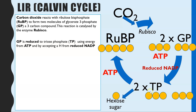This is the first stage where we see ATP being used, and it's also where reduced NADP is used. To convert GP into TP, energy is required, so one molecule of ATP is hydrolyzed and the energy released is used for that conversion. The reduced NADP donates its hydrogen to the GP molecule, which therefore becomes reduced. So going from GP to TP is a reduction reaction — reduced NADP is re-oxidized because it is donating hydrogen.